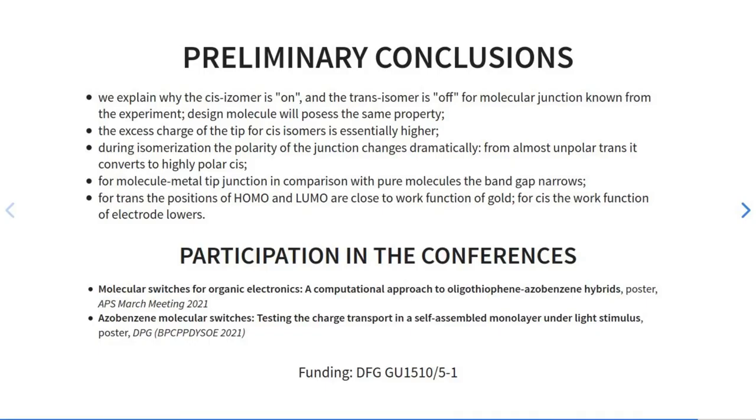Now we came to preliminary conclusions. We explain why the cis isomer is ON state and the trans isomer is OFF for such molecular junctions known from experiment. And designed molecule will possess the same property. The excess charge of the tip for cis isomers is essentially higher. During isomerization, the polarity of the junction changes dramatically. From almost unpolar trans, it converts to highly polar cis.